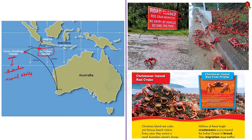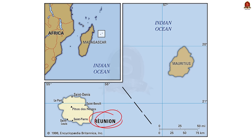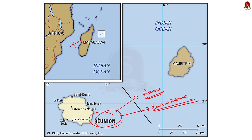Comoros is located between Madagascar and Mozambique. It is an archipelago with a unique blend of Arabian, African and French cultures. Finally, Reunion Island is an overseas department and region of France, located approximately 950 km east of Madagascar and 175 km south-west of Mauritius. Reunion is an outermost region of the European Union and is part of the Eurozone. In this discussion we saw briefly about the various islands in the Indian Ocean and their significance.